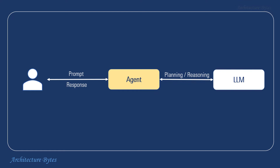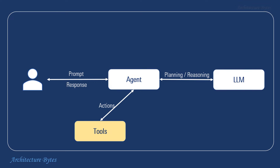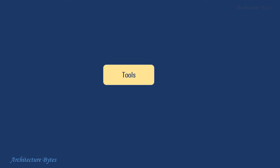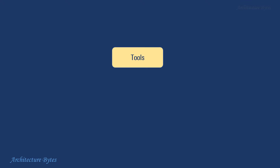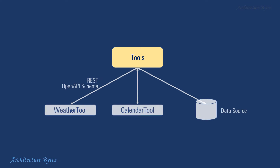Let's add an orchestrator or an agent in between, so that we send our queries to the agent instead of the LLM, and add tools that can perform actions. Now our agent has access to both the LLM and tools. The LLM can do planning and reasoning while tools can perform actions. Tools can be of many types, like those that can invoke APIs or fetch data from a data source, and so on.